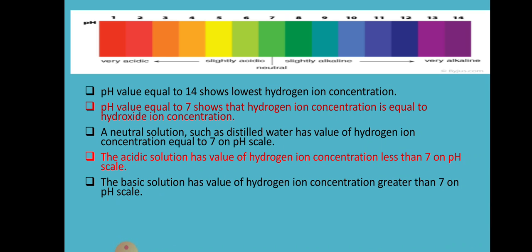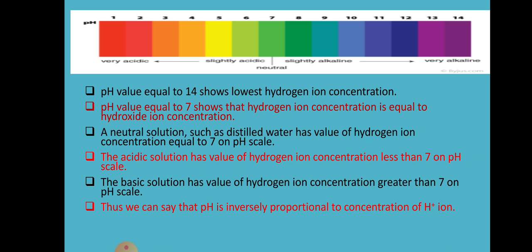If the value of hydrogen ion is greater than 7 — if it crosses 7 — then it is a basic solution. Thus we can say that pH is inversely proportional to the concentration of hydrogen ion. Let us discuss this point by point.